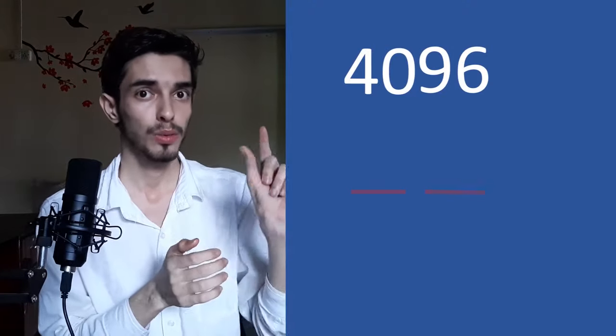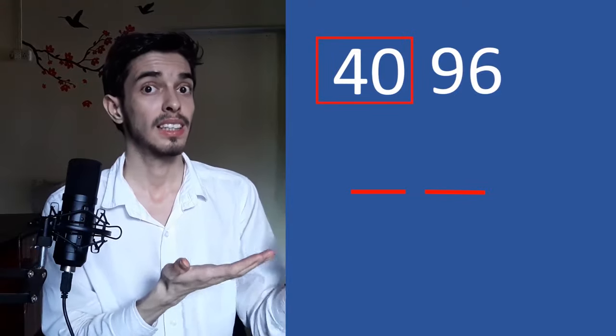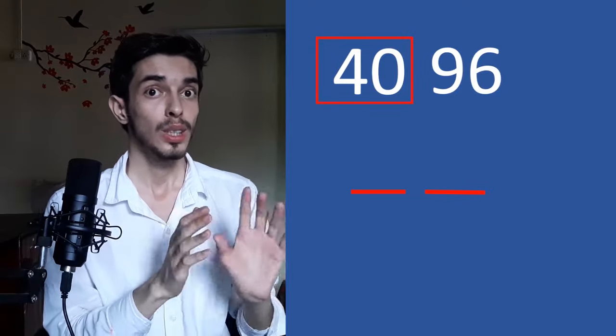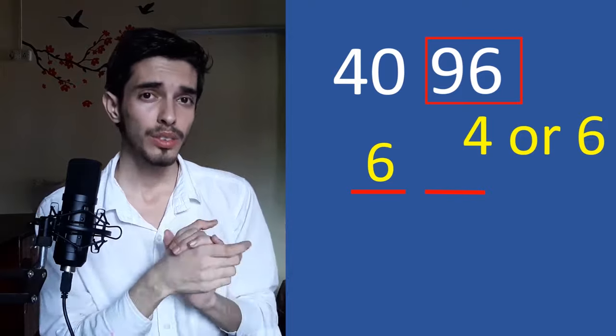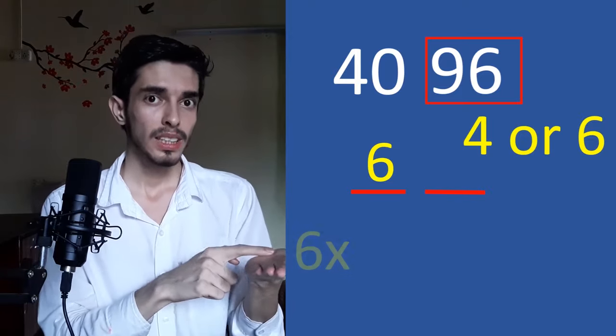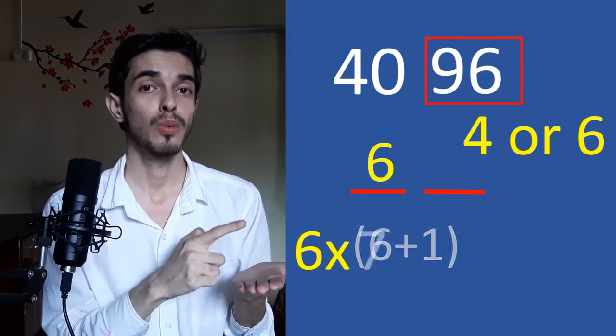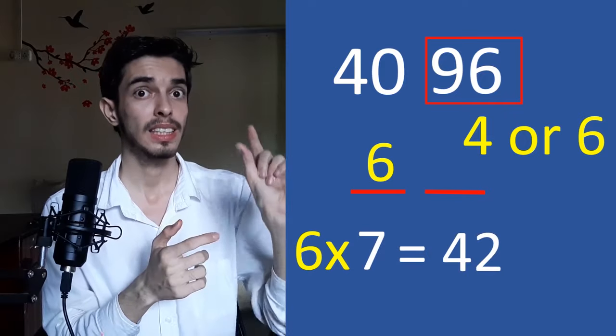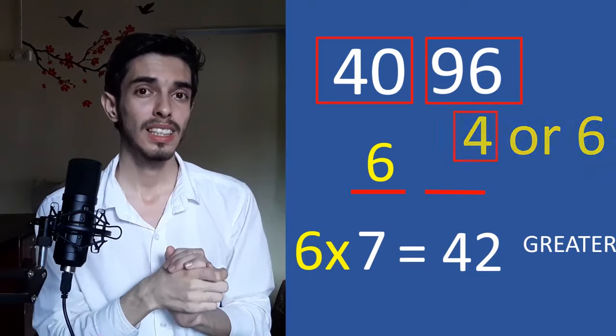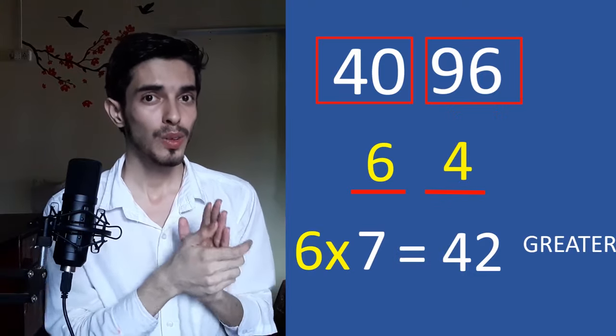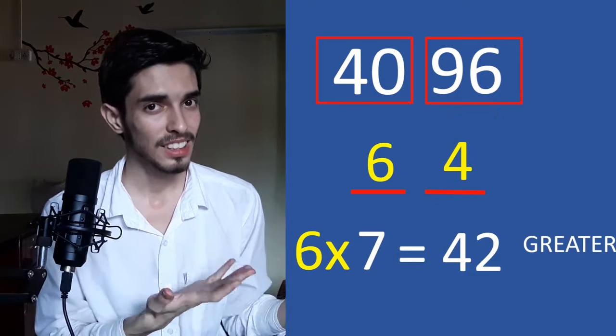So, this is how simply we can find square roots. Now, let's try another one. 4096. So, 5 has a 25. 6, 6 has a 36. 7 has a 49. So, 6 is our first digit. Now, this number ends in 6. So, the other number is either 4 or 6. Now, which one to choose? So, 6 into 6 plus 1. 6 has a 42. Our first digit is 40. This is greater. So, go with the lower one. 4. So, our answer is 64. So, the square root of 4096 is 64.